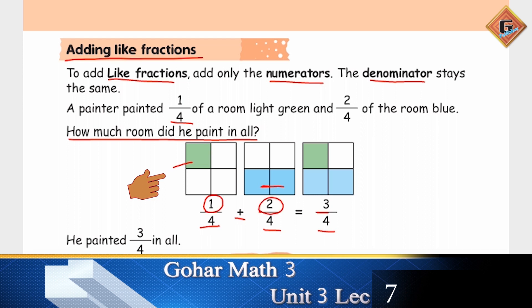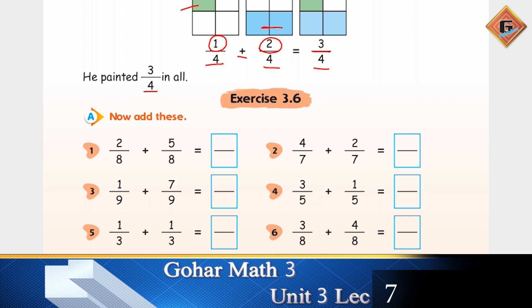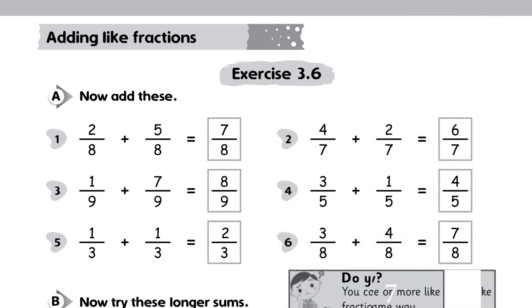Let's do Exercise 3.6. Now add these. The first one is two over eight plus five over eight. Eight is going to stay the same and then two plus five equals seven. The answer is going to be seven over eight. Good.